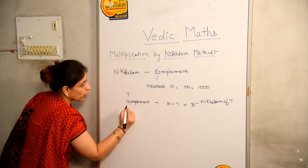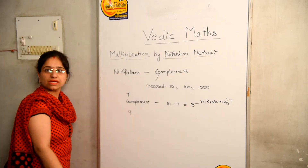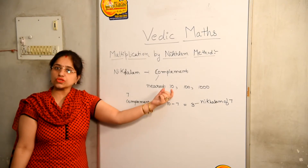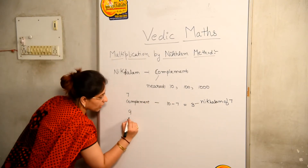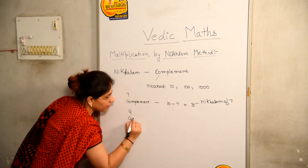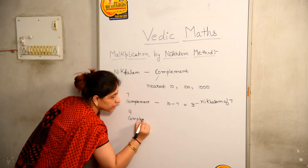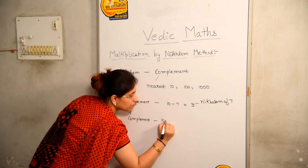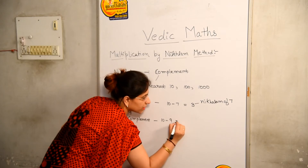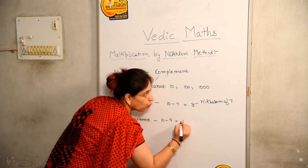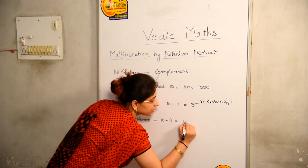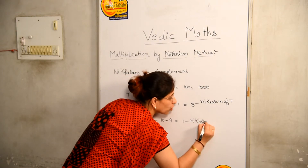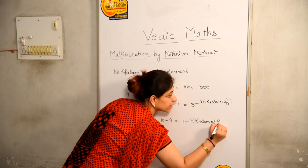Let us take one more example. Let us take 9. Now 9 is very close to 10 again. Let us calculate the complement of 9. 10 minus 9 is equal to 1. So 1 is the Nikhilam of 9.